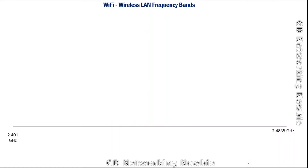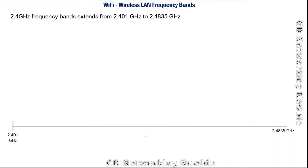When we say band, it means a range of frequencies. For example, when we say Wi-Fi operates in the 2.4 gigahertz band, we mean it operates in a frequency range that extends from 2.40 to 2.4835 gigahertz. That is the actual frequency range in which these Wi-Fi devices operate.